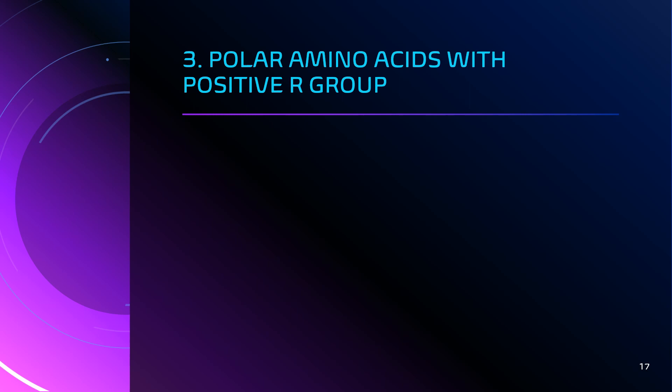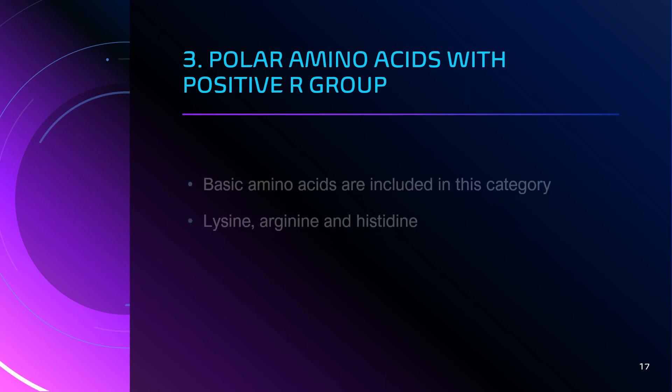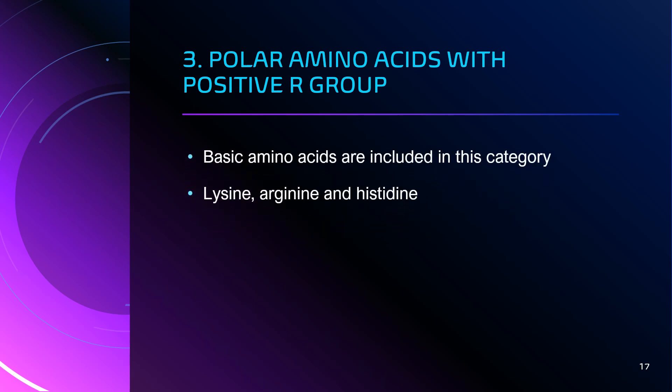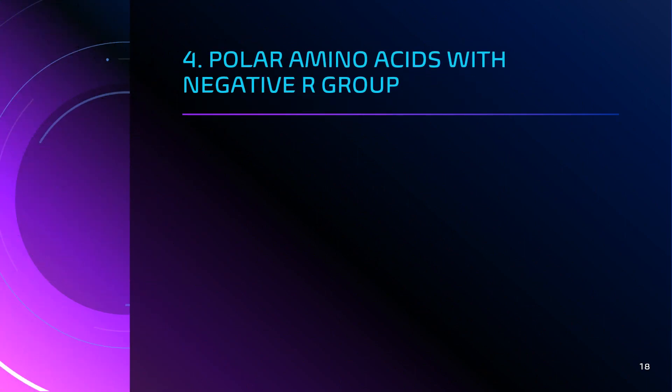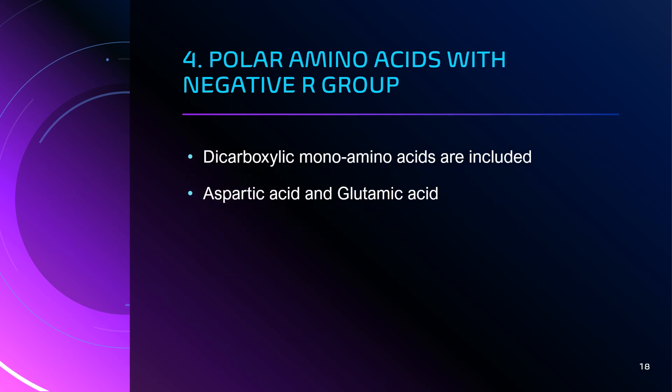The third category is polar amino acids with a positive R group — meaning they have a positive charge on their R group. This category includes the basic amino acids: lysine, arginine, and histidine. The fourth and last category is polar amino acids with a negative R group, which includes the dicarboxylic monoamino acids — aspartic acid and glutamic acid.